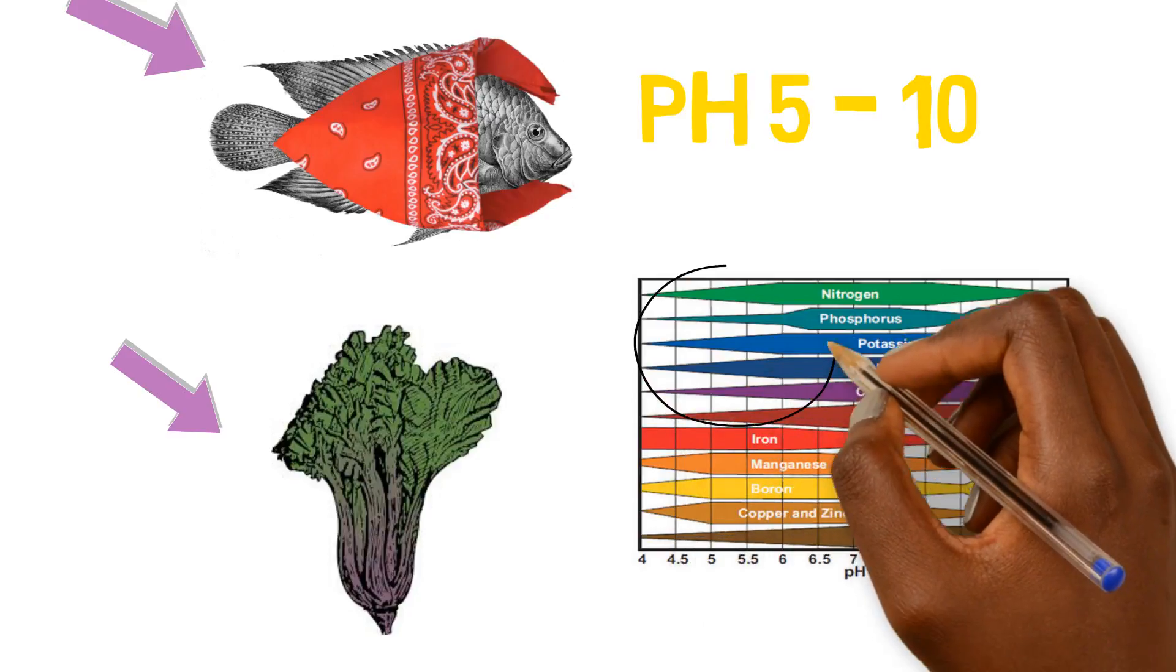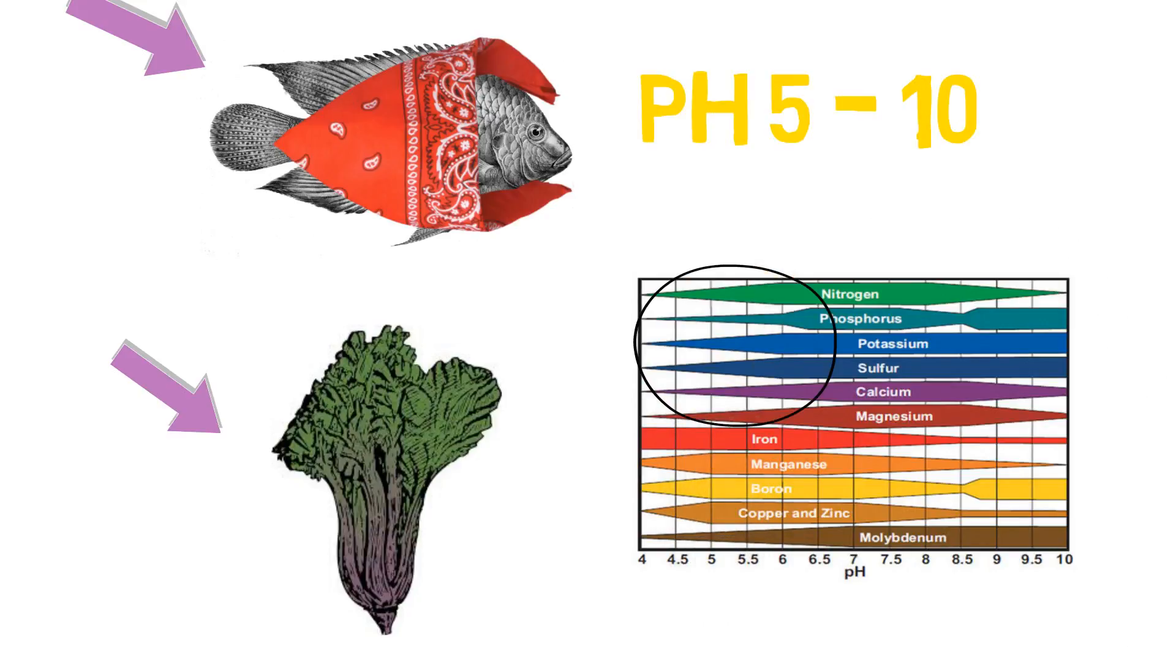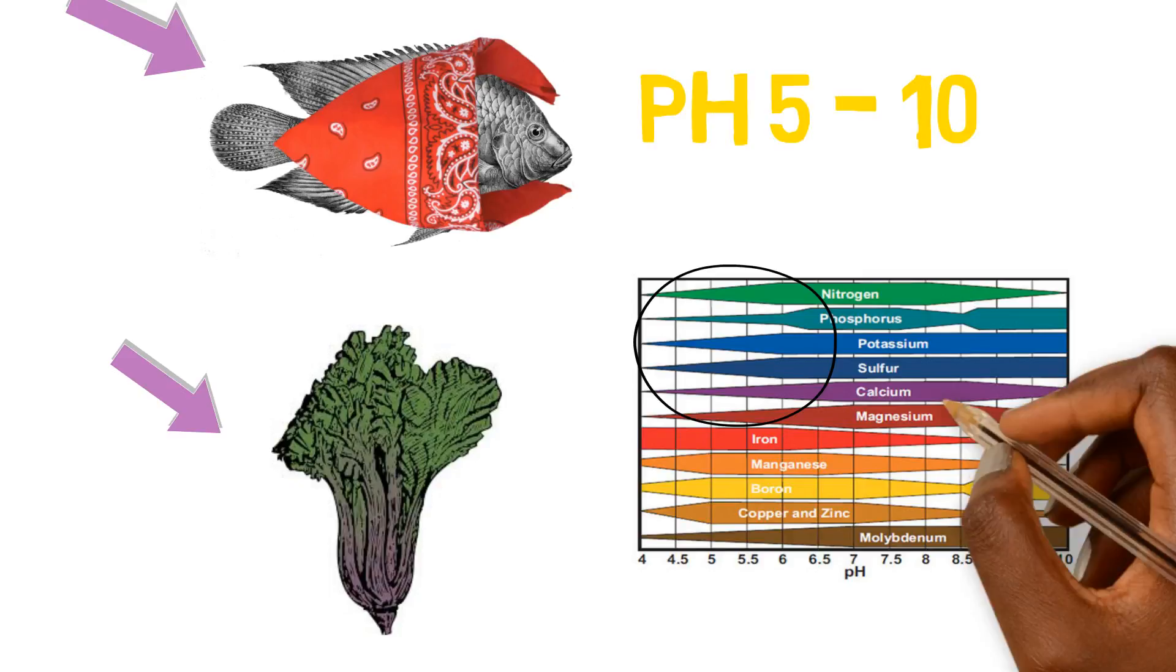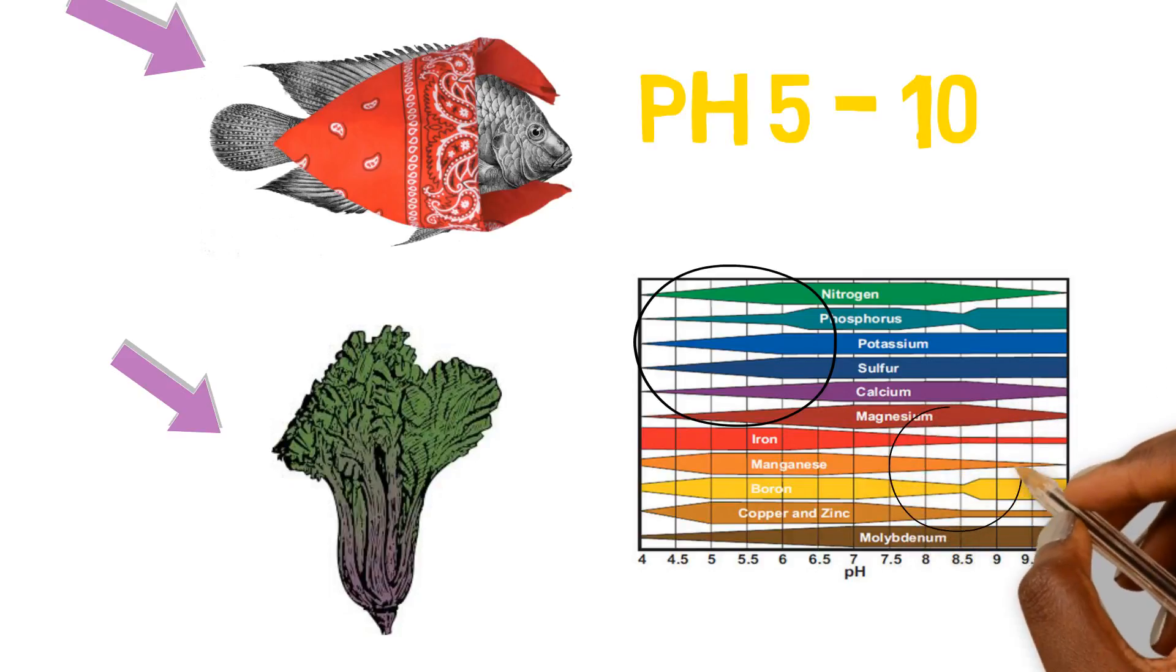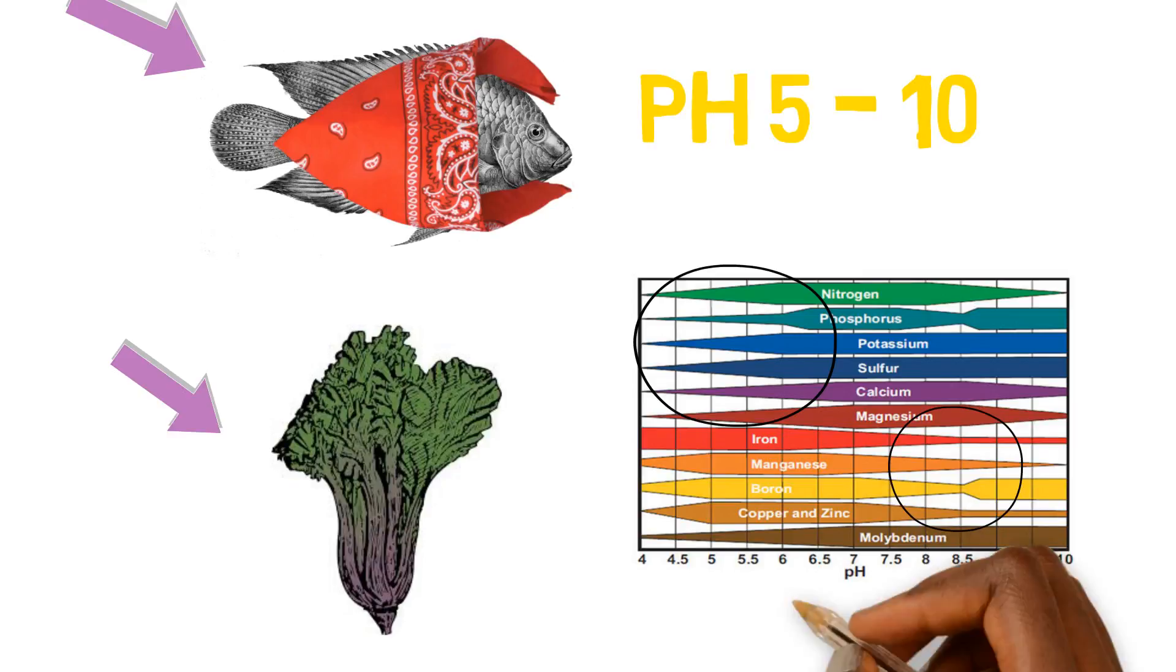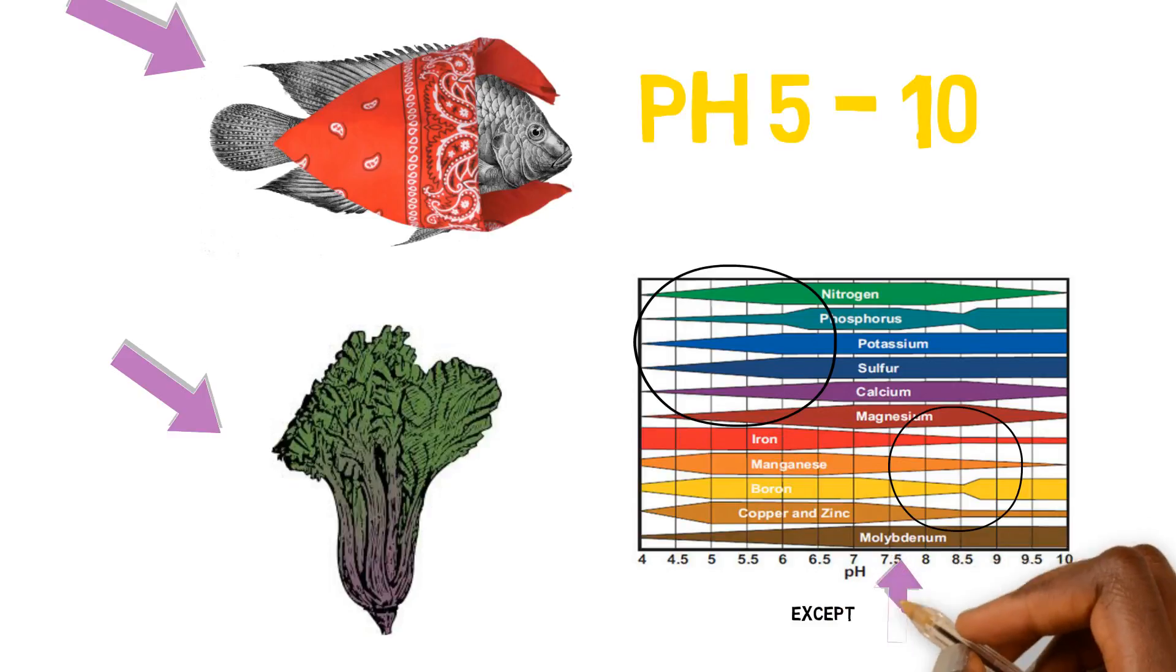the macronutrients such as magnesium, nitrate, potassium, calcium, these macronutrients begin to become less available to the plant. Whereas on the other spectrum, as you begin to increase your pH above 7.5 and 8 around those areas, you can see that the macronutrient uptake begins to decrease. So we have to find a balance in this equation.